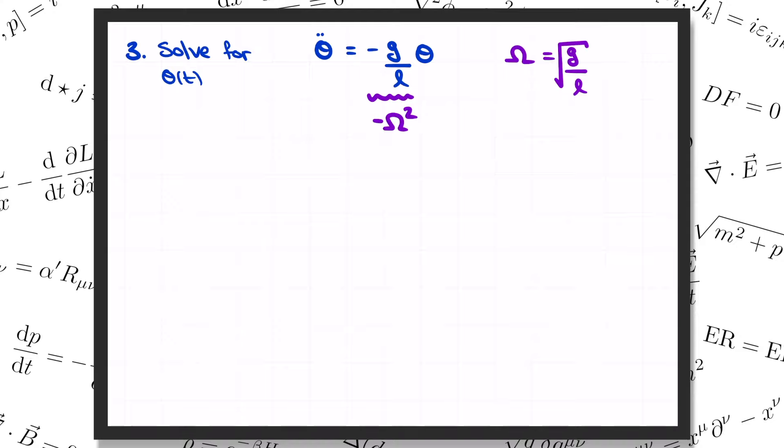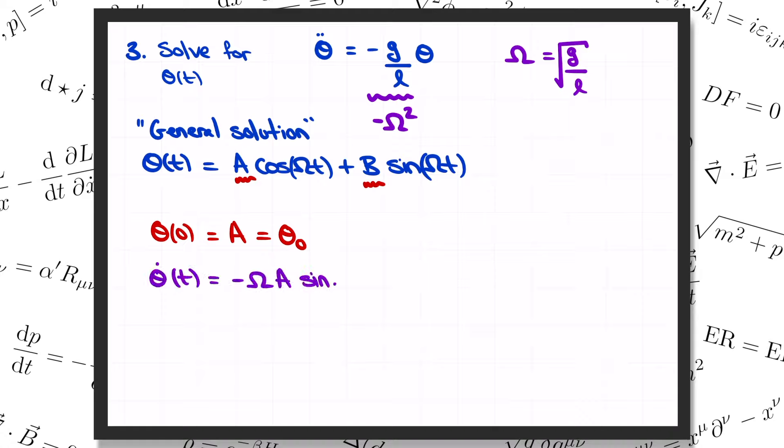So, the general solution to our f equals ma equation when theta is small is theta of t equals a cosine omega t plus b sine omega t. a and b here are two constants that will depend on the initial conditions. Where was the pendulum, and how fast was it moving when t was equal to zero? If we plug in t equals zero, we get theta of zero equals a, so that a corresponds to the initial angle, theta zero, of the pendulum. b, meanwhile, is related to the initial angular velocity. Theta dot is minus omega a sine of omega t plus omega b cosine omega t, so that theta dot at t equals zero is just omega times b. That means we could alternatively have written our general solution as theta of t equals theta zero cosine omega t plus theta zero dot divided by omega times sine omega t.